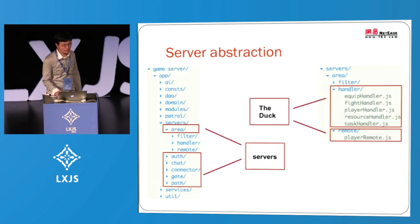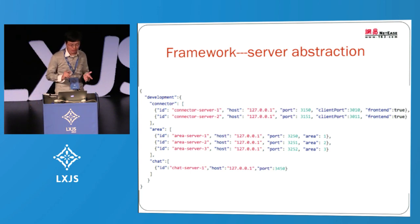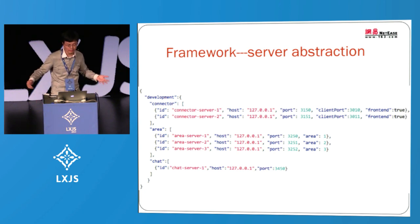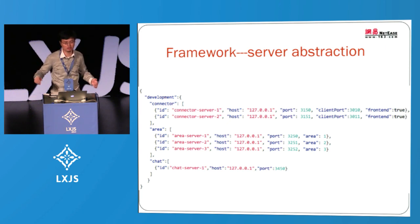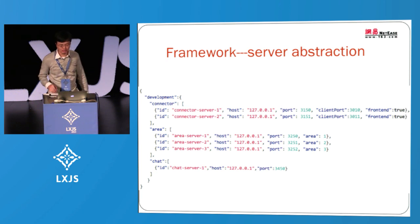We actually need a configuration file, but we try to minimize it — we just need one. It is quite straightforward: you just add the server type and servers. It is quite easy to add, reduce, scale up, and scale down. We also support dynamically adding and removing servers through the command line or other ways, so it can scale up and scale down dynamically like cloud computing.